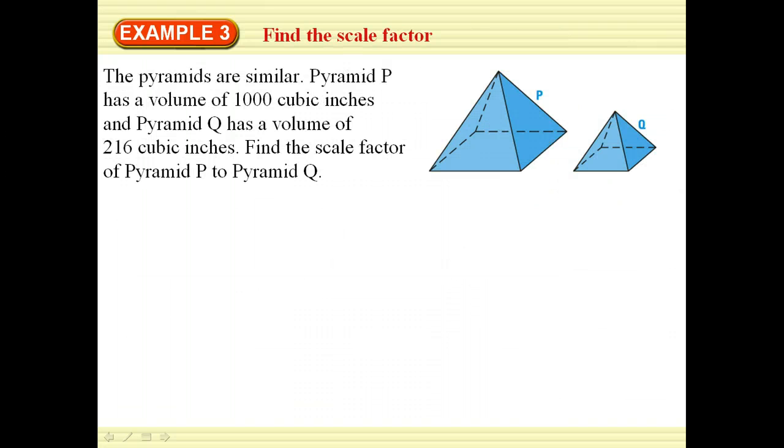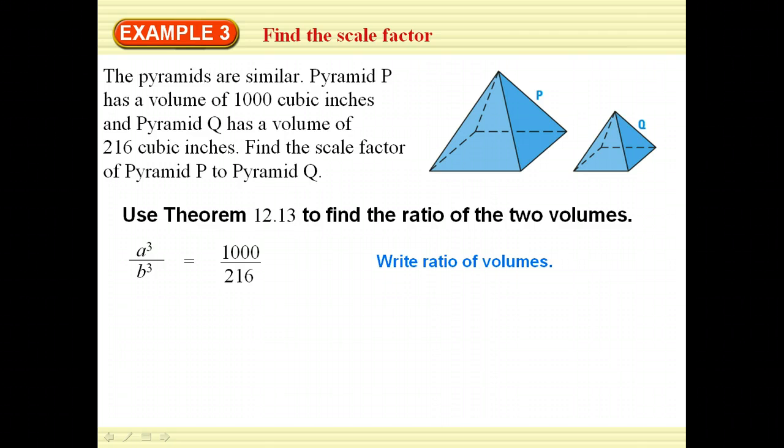Pyramids are similar. Pyramid P has a volume of 1,000 cubic centimeters. And pyramid Q has a volume of 216 cubic centimeters. So find the scale factor of pyramid P to pyramid Q. Well, according to this, the ratio of the two volumes is a cubed to b cubed, which is 1,000 over 216. So we find the cube roots to see that our scale factor is 10 to 6. Simplify that down to 5 thirds.